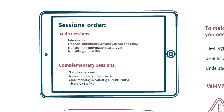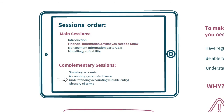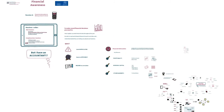We can now signpost you to other key support in this series. Session three is all about management information — you'll learn what management information you need to make great decisions in your business. Session four lifts the lid on how to better control your business through financial modelling. There are also complementary sessions to deepen your knowledge: statutory accounts — what they are and how to manage them to best advantage; accounting systems and software to help you understand what's out there and think before you buy; understanding accounting, where you'll learn the fundamentals of how accountancy works; and the glossary of terms, an essential reference point for explanations of the many finance and accounting terms. Goodbye for now.